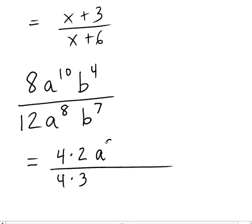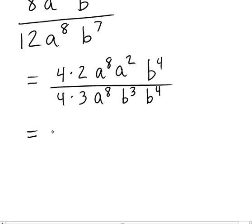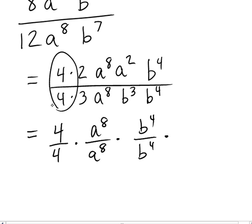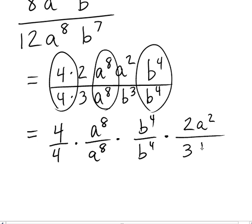The 8 to the 10th can be factored into 8 to the 8th times a squared. These exponents add up to 10. You've got 8 factors of a and 2 more factors of a, creating the 10 factors of a. And I did that so that I would have these matching a to the 8ths. Now, I'll write the b to the 4th down in the numerator. The b to the 7th in the denominator can be factored as b to the 3rd times b to the 4th. So that now I have these matching b to the 4ths. Now I'm going to separate this into a product of a bunch of fractions. 4 over 4 times a to the 8th over a to the 8th times b to the 4th over b to the 4th. So I just group those common factors together. And then what I have left is 2a squared over 3b cubed.